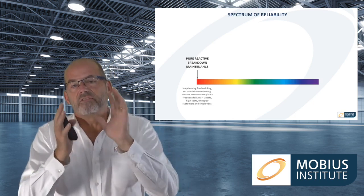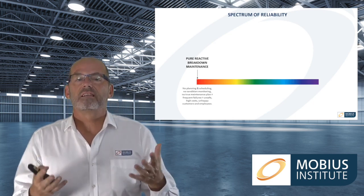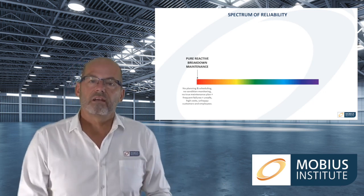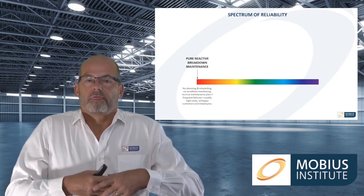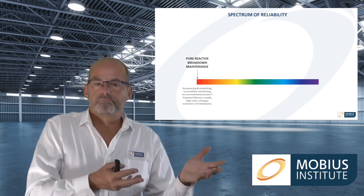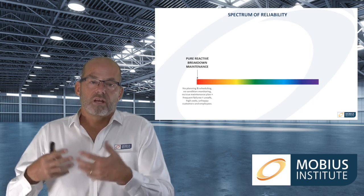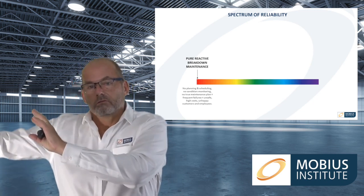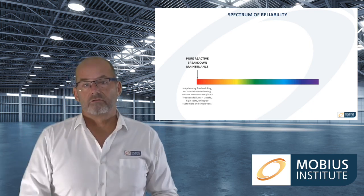There are other videos on this topic so I won't dwell on it, but the way we see it there's a spectrum of reliability. At one end is pure reactive or breakdown maintenance — equipment fails, we fix it. There's no planning and scheduling, we just react to failures and to whatever appears most urgent. We don't have effective condition monitoring warning us of problems.